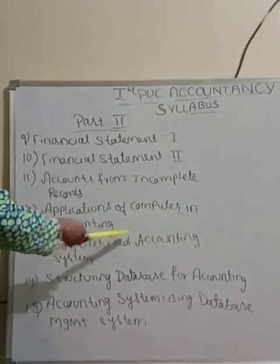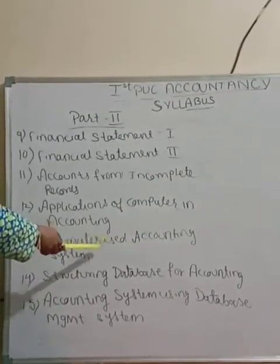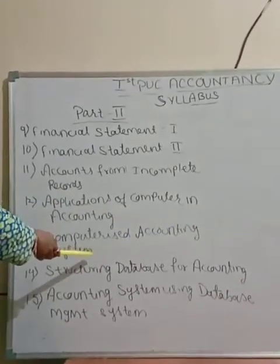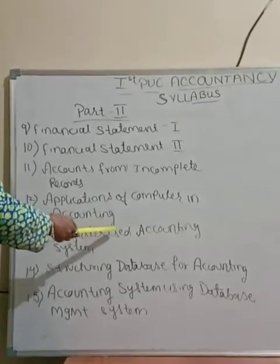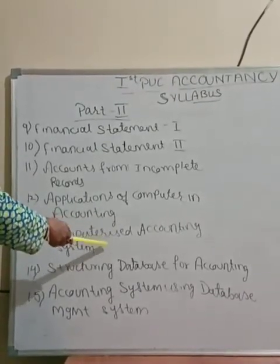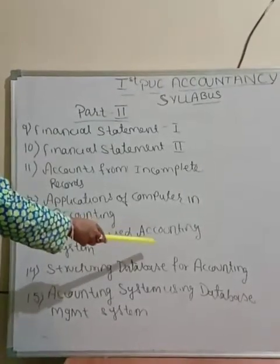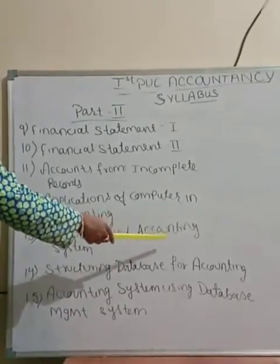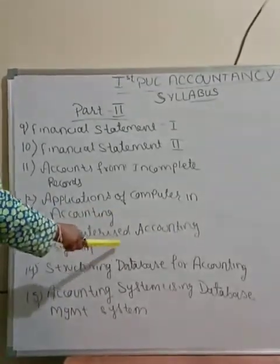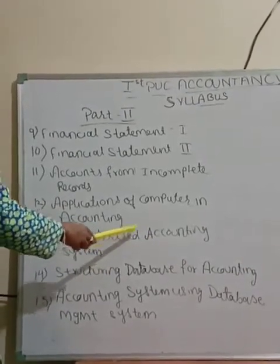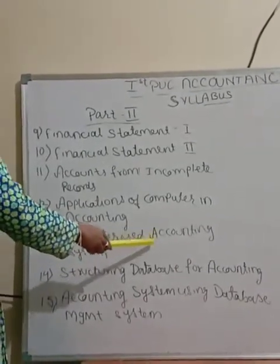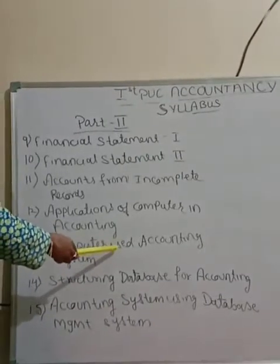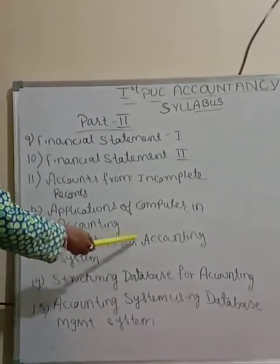Chapter 13 is the Computerized Accounting System. Here we are going to learn the meaning of a computerized accounting system — that is, accounts maintained through computers. We will study the difference between manual accounting and computerized accounting, advantages and limitations of the computerized accounting system, sourcing of accounting softwares, and general considerations before sourcing an accounting software.